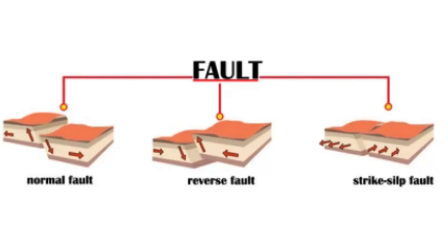What is a fault? In geology, a fault is a fracture or break in the earth's crust where rocks on either side of the fracture have moved relative to one another. Faults are typically classified based on the direction of movement of the rocks on either side of the fracture, as well as the type of forces that caused the movement.